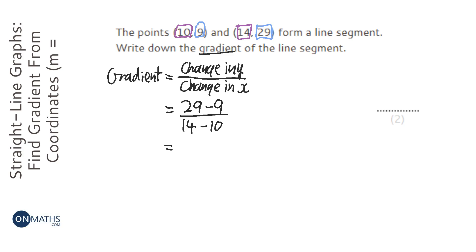Now it's common for students to do change in x at the top because they're always told x comes before y, but in gradients it's the other way around. You always do y first. So 29 take away 9 is 20, 14 take away 10 is 4.